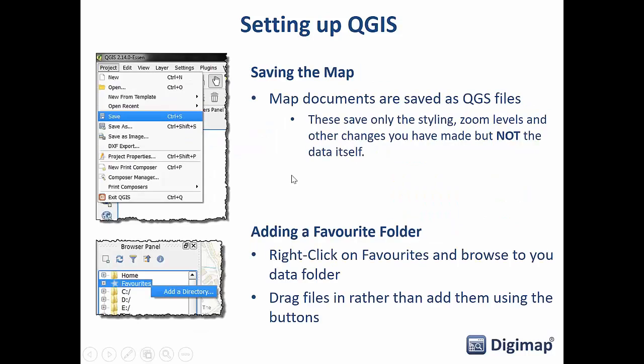Saving the map: much like ArcGIS, map documents are saved as map files. These save the styling applied, zoom levels, and other setup changes — but not the data itself, which stays in the data files. If you save a map and then delete or move the data folder, the map will break. As part of your data management, have a place for map documents and a place for data, and make sure they stay in the same relative location. Don't rename data files outside of QGIS, and everything will be fine.